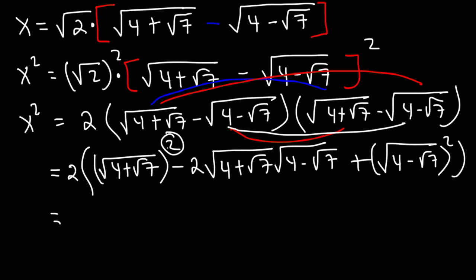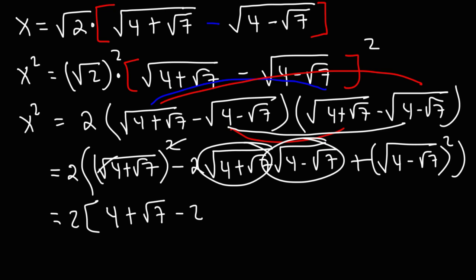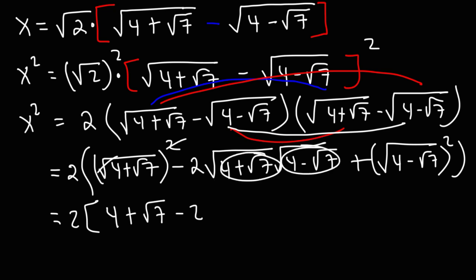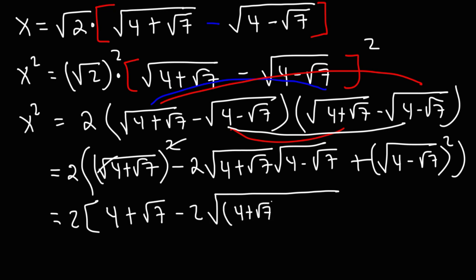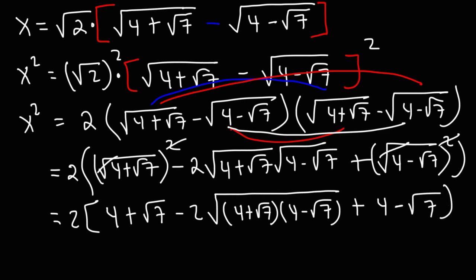Whenever you square an expression within a square root symbol, the square root and the square cancel, so we just get what's inside the first square root symbol — that's going to be 4 plus the square root of 7. When you multiply one square root by another, you can combine them into a single square root symbol. So the middle term becomes negative 2 times the square root of (4 + √7)(4 − √7). And for the last part, the square root squared cancels, giving us 4 minus the square root of 7.